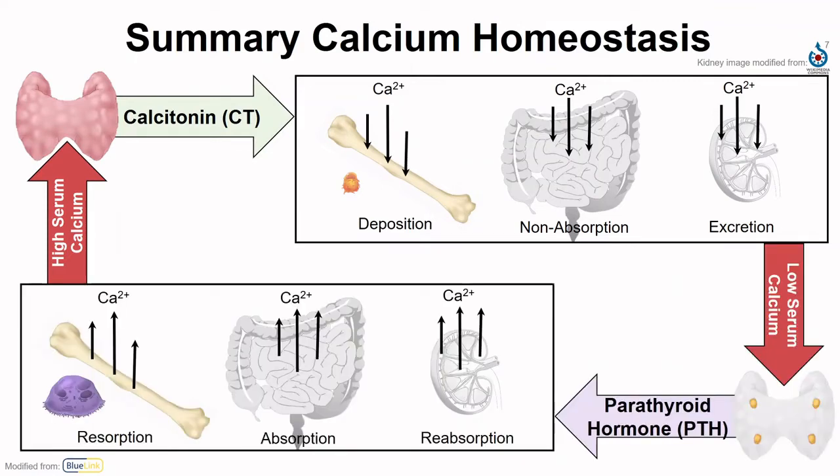In the case of low serum calcium, parathyroid hormone is secreted from the parathyroid glands, and that leads to the liberation or removal of minerals from the bones to increase that serum concentration. The other thing that happens in response to parathyroid hormone is more absorption in the GI tract and more reabsorption in the renal system.